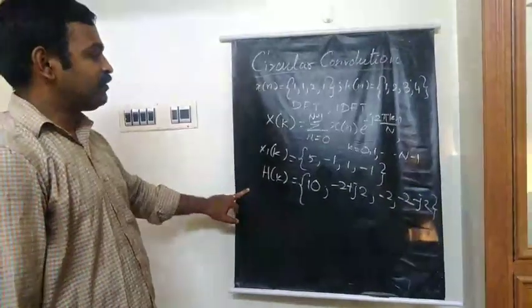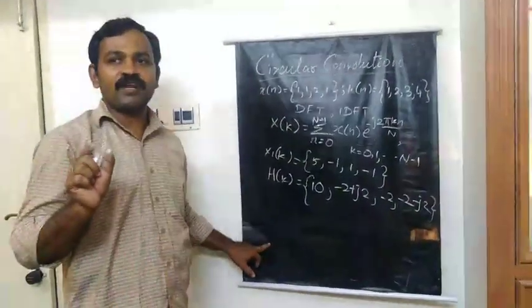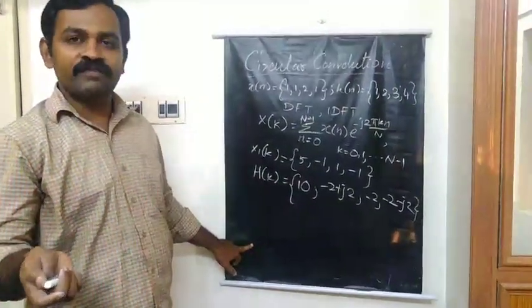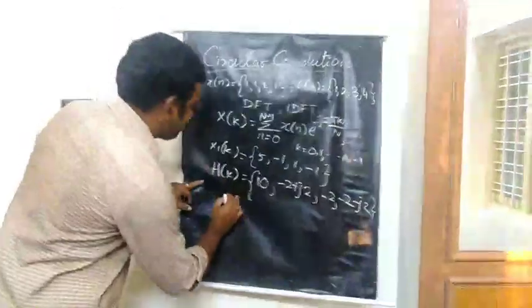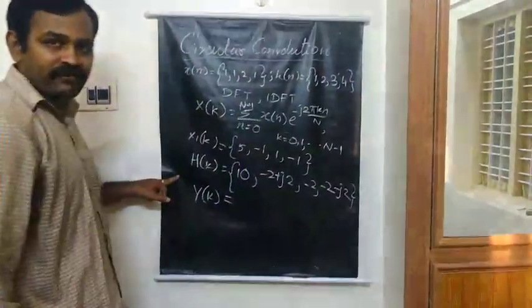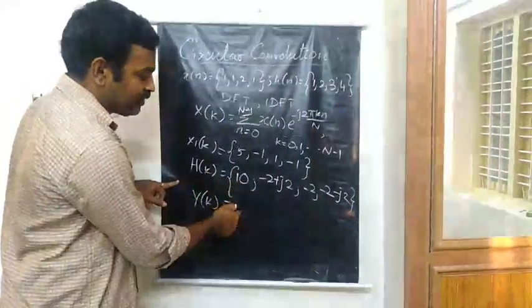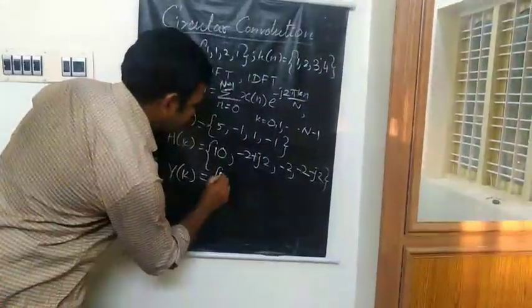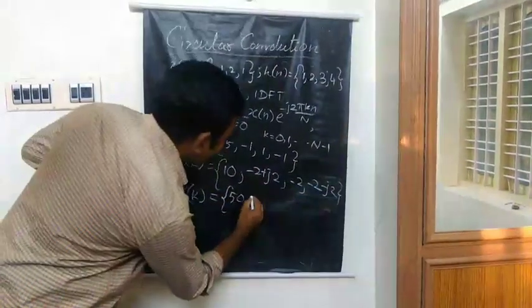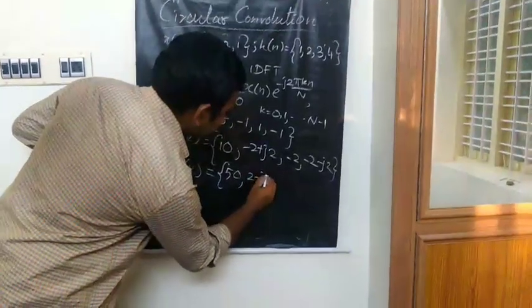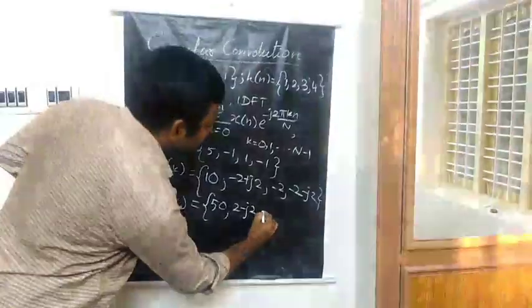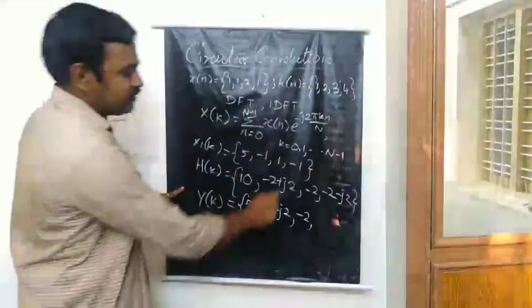As per our convolution theorem, convolution in time domain is equal to multiplication in frequency domain. So for finding Y of k, just multiply these two sequences: 5 into 10, you will get 50. Next, minus 1, second sequence is minus 2 plus j2. Then this one multiplied by minus 2, you will get minus 2.